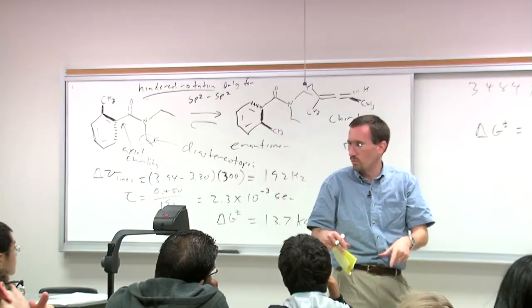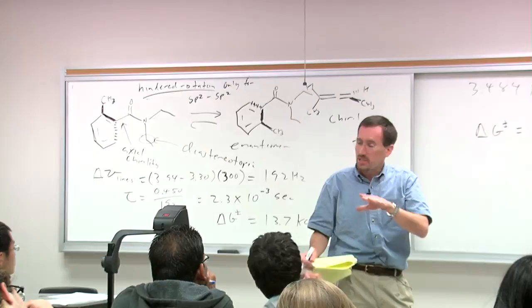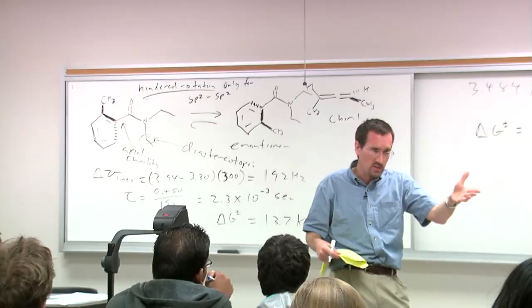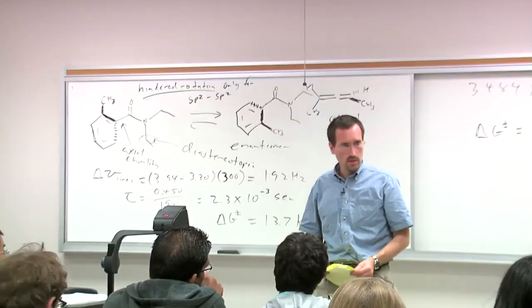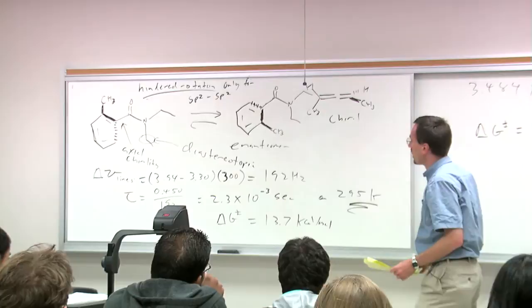Cyclohexane ring flip, where you have two sets of eclipsing interactions, is about 10 kilocalories per mole — still fast on the NMR time scale at room temperature. But if you cool to negative 80 degrees, it can become slow. That's a good example of sp3 atoms coupled together.